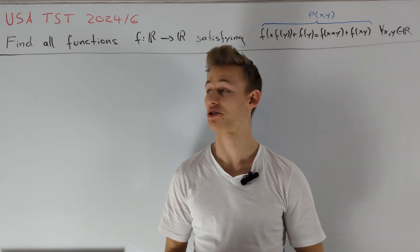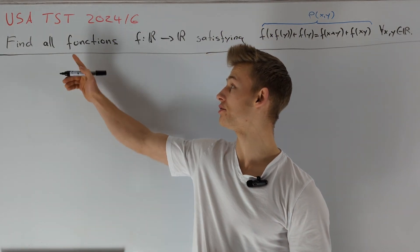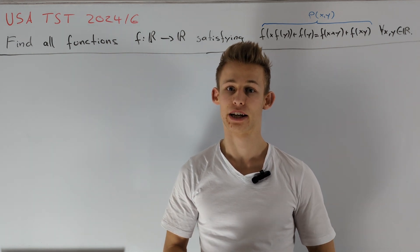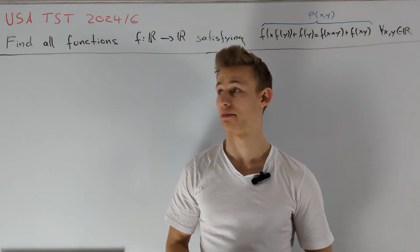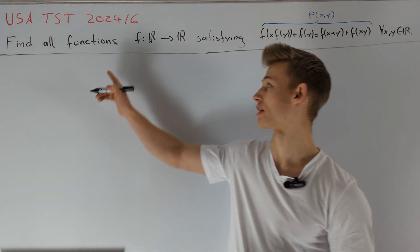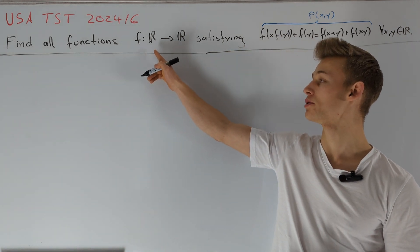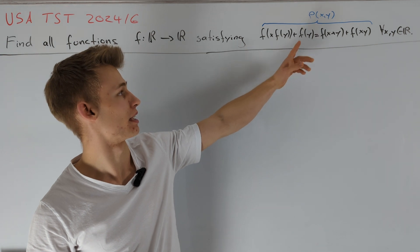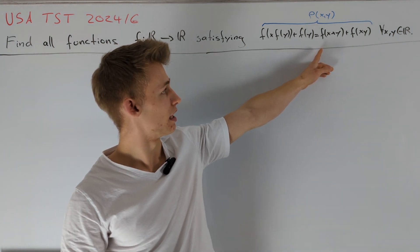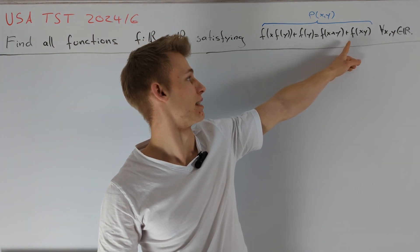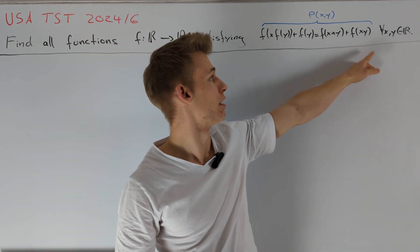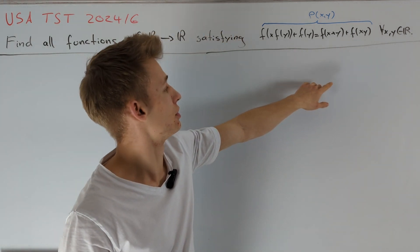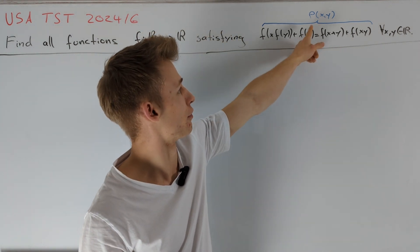Hey guys, today I want to present a solution to the USA team selection test 2024 problem 6. First let's have a look at the problem statement. We are asked to find all functions f from the real numbers to the real numbers such that f(x·f(y)) + f(y) = f(x+y) + f(xy) for all real numbers x and y. I want to denote this equation by P(x,y).